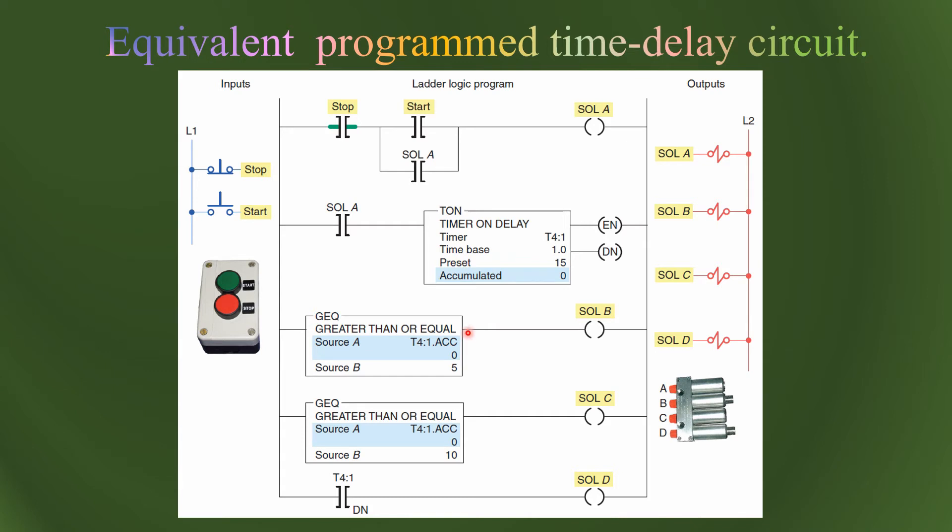You may have noted that by using only one timer and the comparison instruction blocks, we can control the relays. This is an optimal program because the number of timers is only one and the rest of the logic is completed using just the greater than and equal instruction, which are faster than using timers and also take low resources in PLC operation and memory.